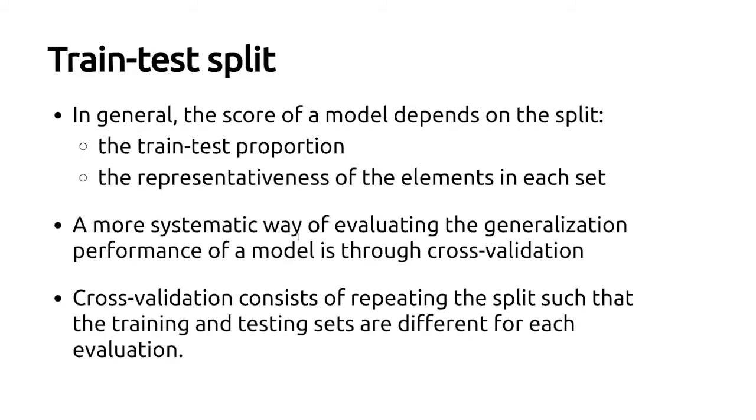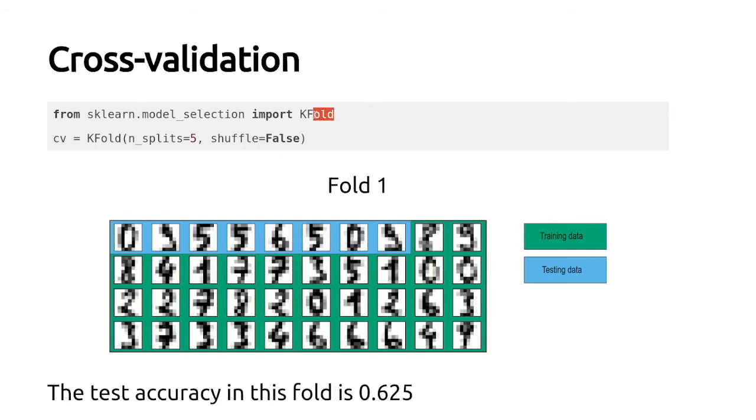But happily, we have a more systematic way of evaluating the generalization performance, and that's through cross-validation, which consists of repeating the split such that the training and testing sets are different for each evaluation. The default strategy in scikit-learn is a k-fold cross-validation, where k stands for the number of splits of the dataset. Here k equals five.